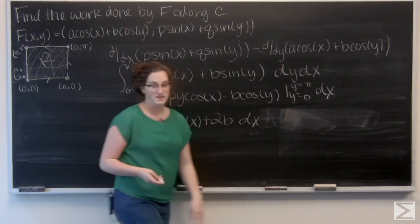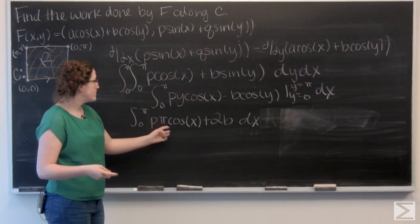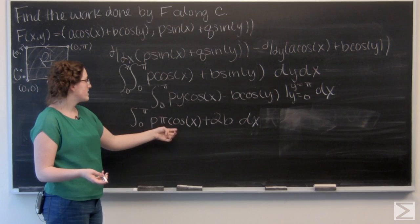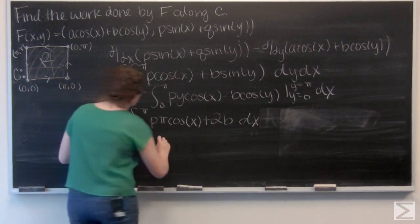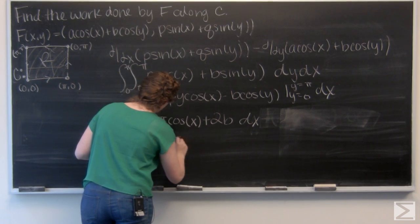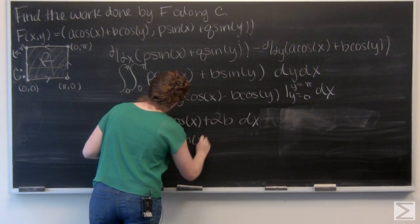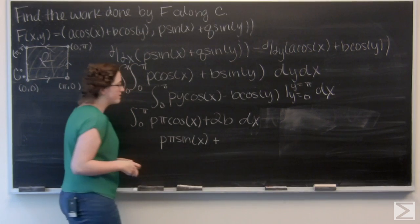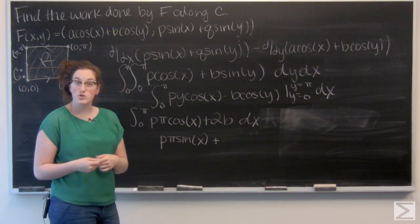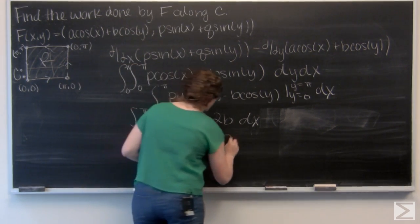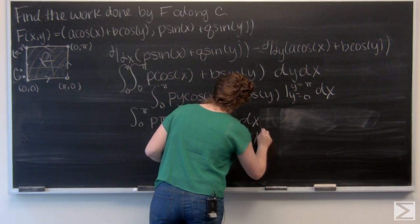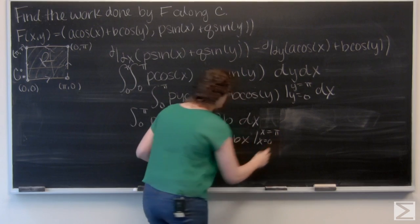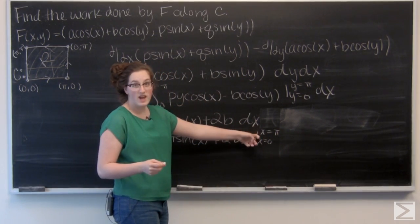Now let's integrate with respect to x. Well, P and π are treated like a constant. So when I integrate cos(x), I'm going to get sin(x). And 2B is also like a constant. So when I integrate, I'm going to get 2Bx.